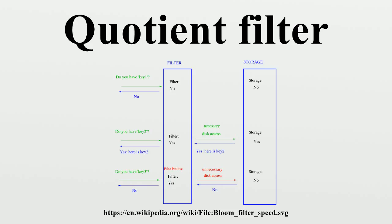Lookup: we can test if a quotient filter contains some key D as follows. We hash the key to produce its fingerprint DH, which we then partition into its high-order Q bits DQ, which comprise its quotient, and its low-order R bits DR, which comprise its remainder. Slot DQ is the key's canonical slot. That slot is empty if its three metadata bits are false. In that case the filter does not contain the key. If the canonical slot is occupied, then we must locate the quotient's run.